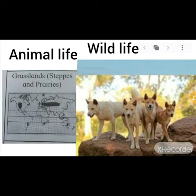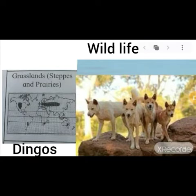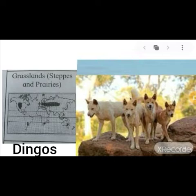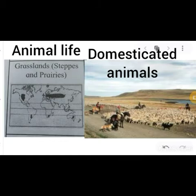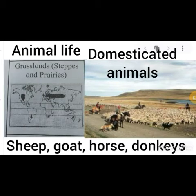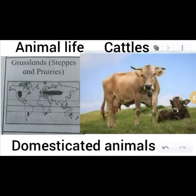Dingoes — a type of dog — are also found in this region. Domesticated animals like sheep, goats, horses, donkeys, and cattle are found in the steppes and prairies type grasslands natural region.